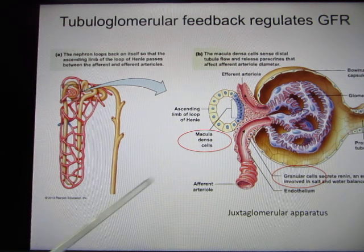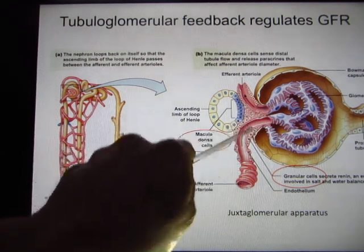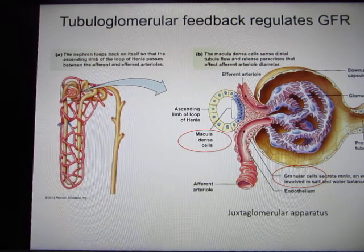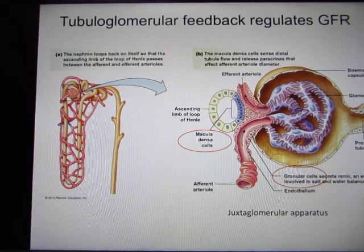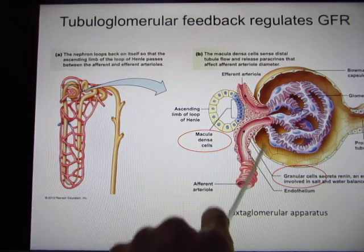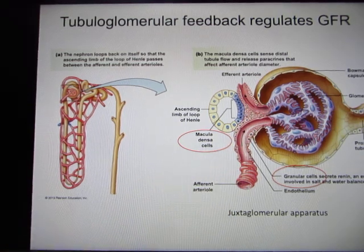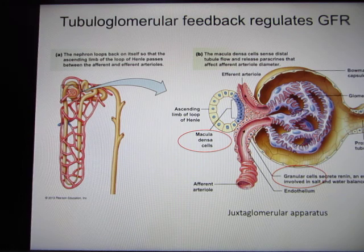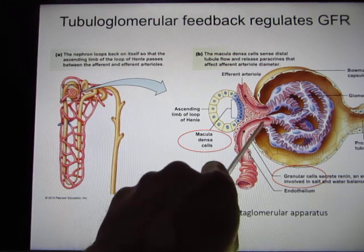The myogenic response is this: blood vessels, like a rubber band, the afferent arteriole will constrict more when you send more blood there. Now let's look at tubuloglomerular feedback — it's a feedback mechanism. It starts when you send more blood here.